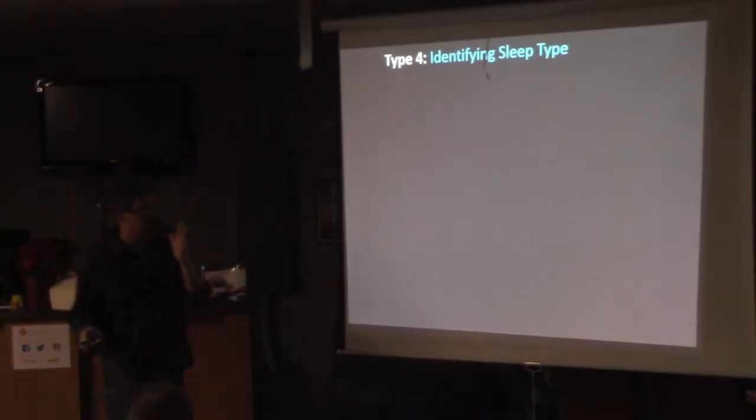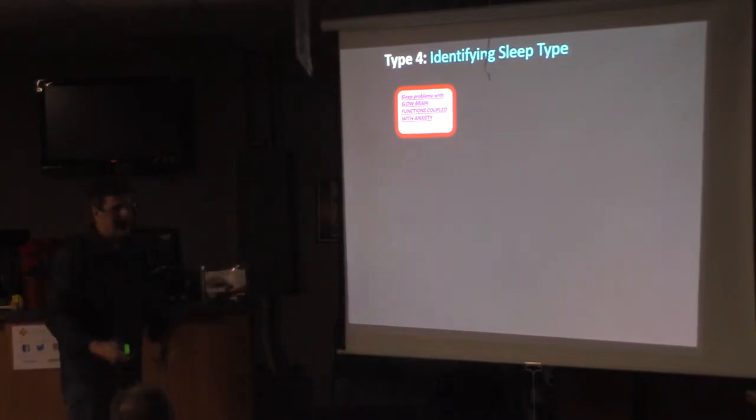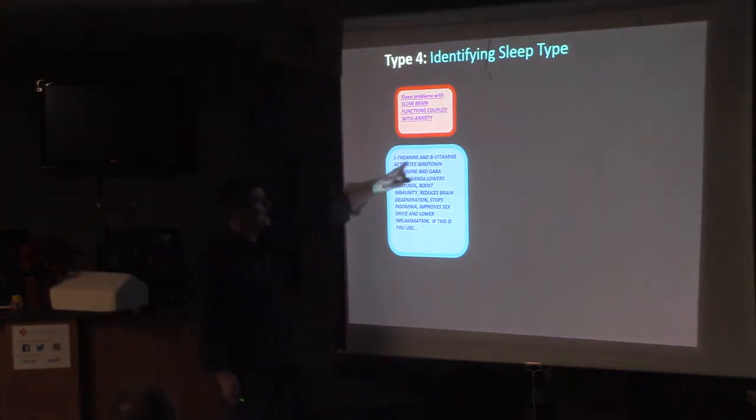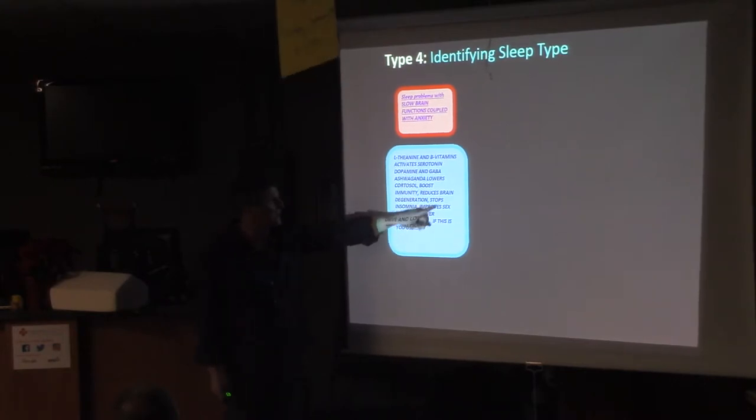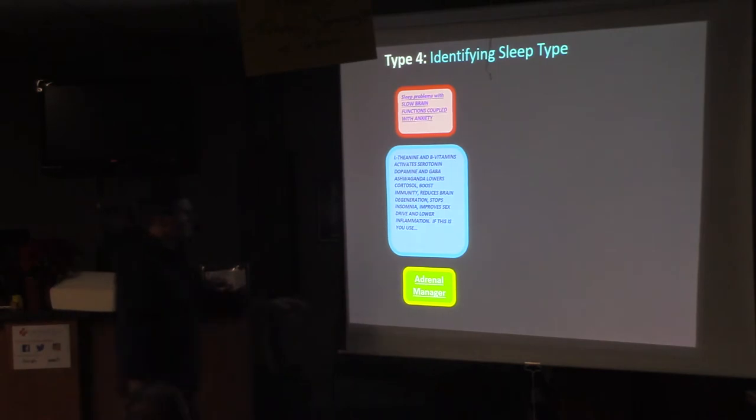Number four. Sleep problems with slow brain fog coupled with anxiety. I have brain fog. I can't think throughout the day. I don't know what's wrong with me. My brain's not working and I'm anxious about everything. L-theanine and B vitamins activates the dopamine and GABA. Ashwagandha, another herb, lowers cortisol, boosts immunity, reduces brain degeneration. This is huge for Alzheimer's. Stops insomnia, improves sex drive, and lowers inflammation. So if you want to reduce systemic inflammation, what you want to use there is called Adrenal Manager. That's going to help your adrenals recover.